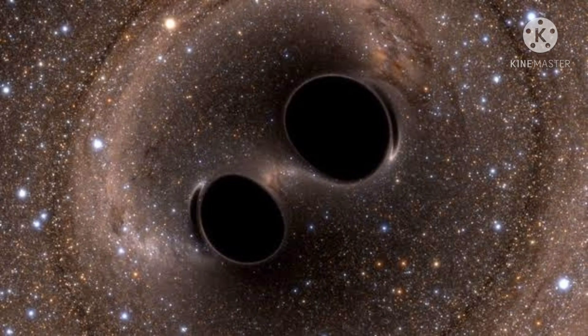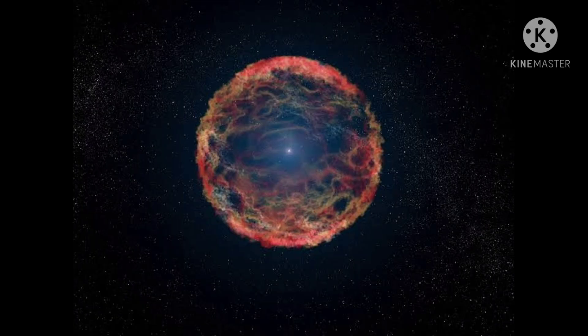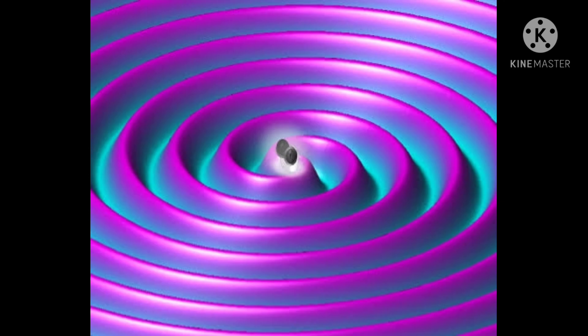Einstein predicted that something special happens when two bodies such as planets or stars orbit each other. He believed that this kind of movement could cause ripples in space. These ripples would spread out like ripples in a pond when a stone is tossed in.